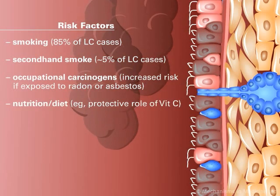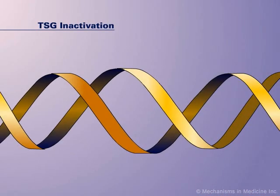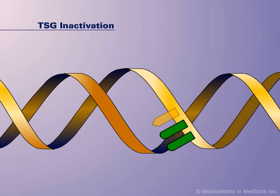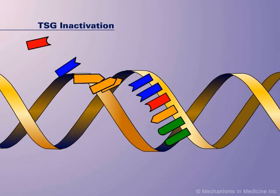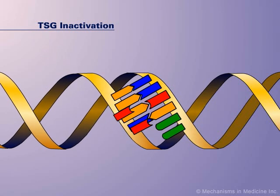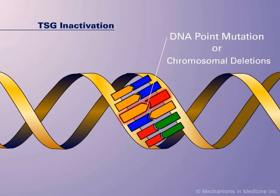Smoking remains the leading and most preventable cause of lung cancer, accounting for 80 to 90% of cases. According to current views on the carcinogenesis of NSCLC, the transformation of a normal lung cell to malignant carcinoma requires the accumulation of multiple genetic and epigenetic alterations. It is believed that early alterations are caused from point mutations or chromosomal deletions that inactivate tumor suppressor genes, or TSGs.